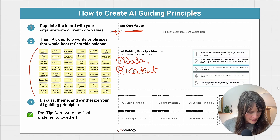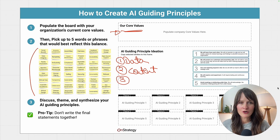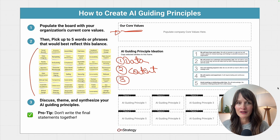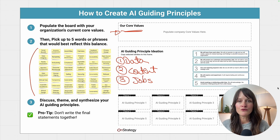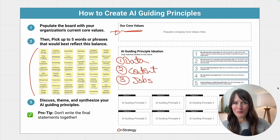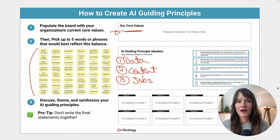Another guiding principle topic you might want to make sure is clearly articulated is your stance on jobs — how you view AI in the context of job replacement or job superpowers. What is it? It's really, really important to be aligned around this as an executive team, so you don't have a different thought six months from now related to AI use.